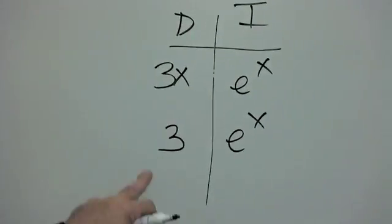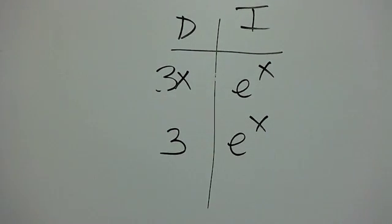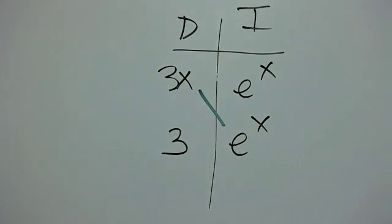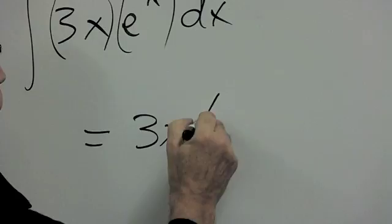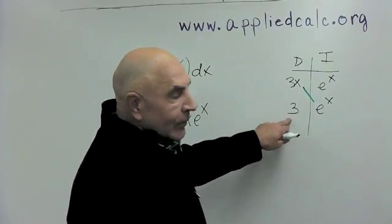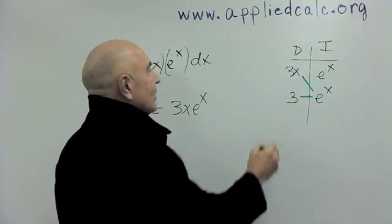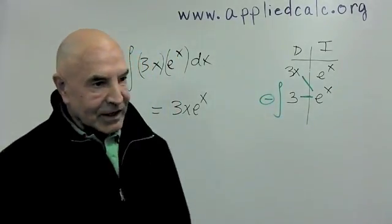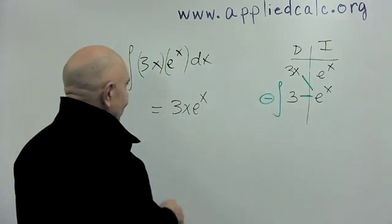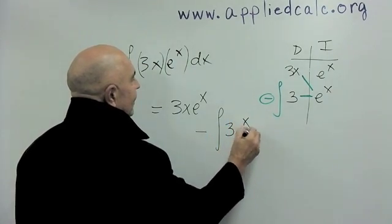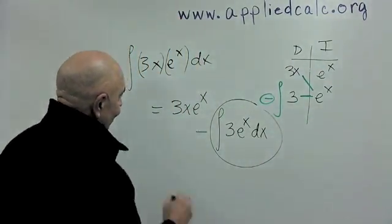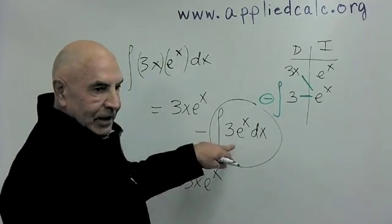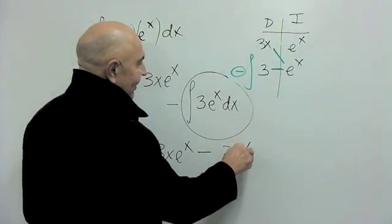This method says if you don't like integrating this product, you can get an easier product by differentiating one and integrating the other. If I differentiate 3x, I get 3. And if you integrate e to the x, you get e to the x again. You must admit this product is easier to integrate. Integration by parts says we multiply this by that, connecting them with a line, giving us 3x times e to the x, and then we integrate the easier product, minus the integral of 3e to the x. The integral of a constant times e to the x is a constant times e to the x. And we're done.